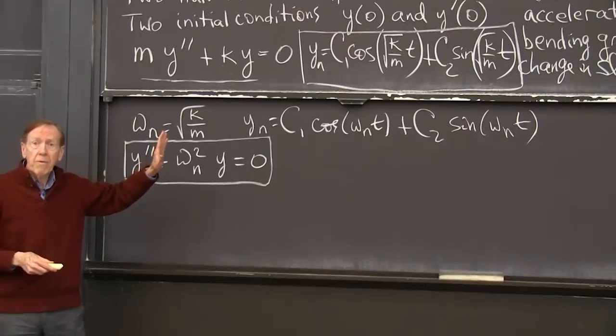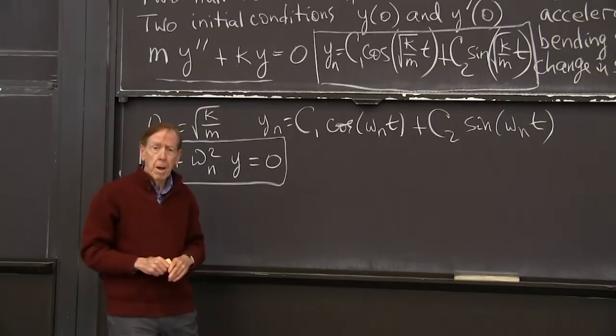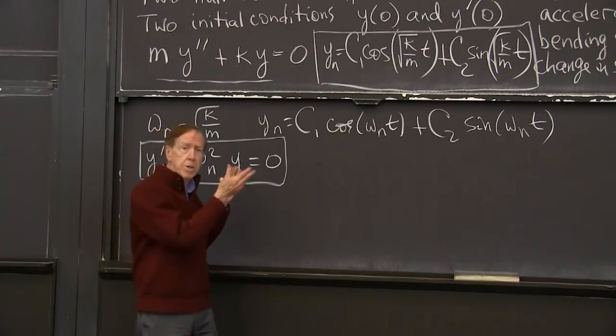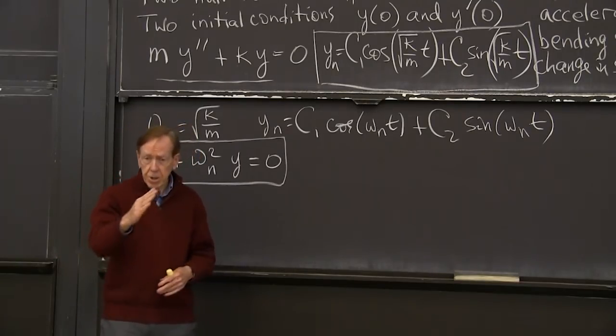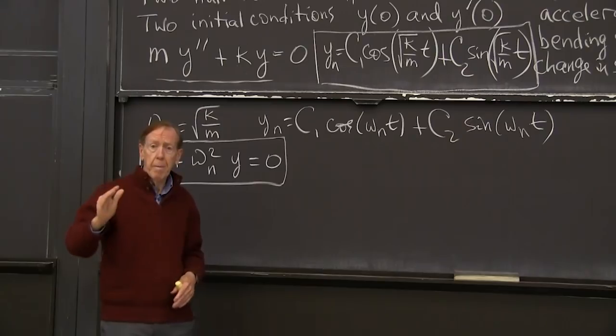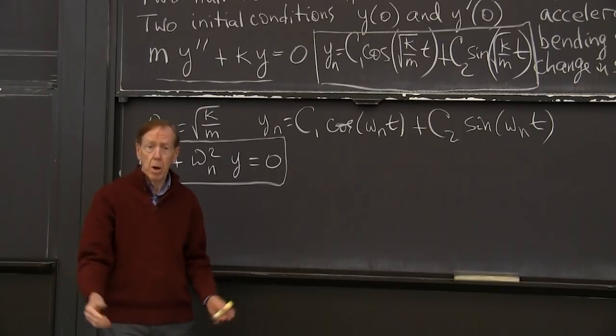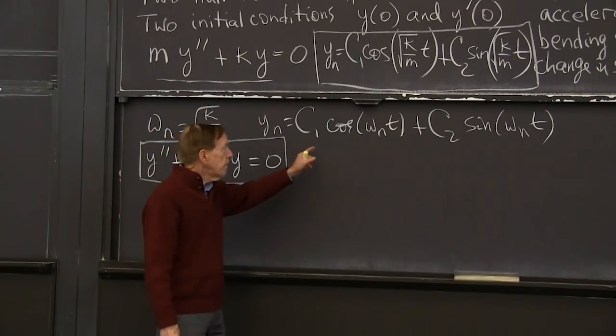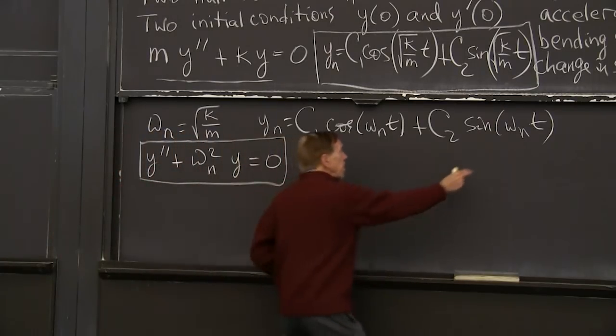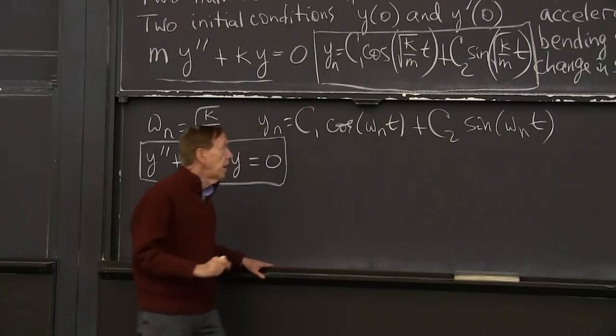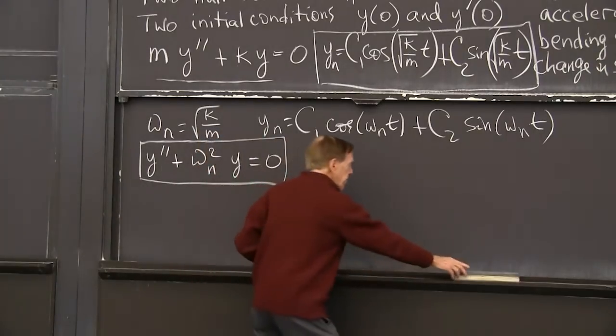So coming from the initial conditions, right? The initial conditions, if I plug in t equals 0, then I want to get the answer y of 0, the known initial condition - the place the pendulum started swinging from, the place the spring - you pulled the spring a distance y of 0, you let go. At t equals 0, so I'm plugging in t equals 0. At t equals 0, that's 0. Forget the sine.